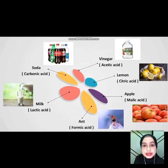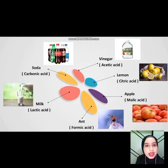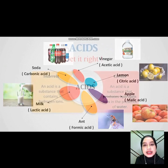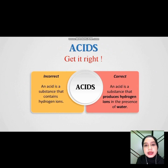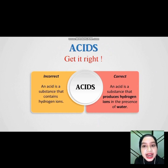For next, we see examples of acid — you can see soda, milk, apple, lemon, and others. An acid is a substance that produces hydrogen ions in the presence of water.